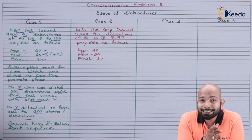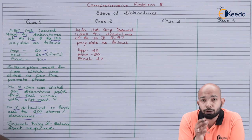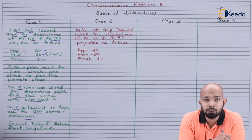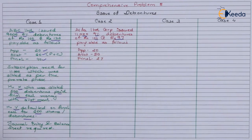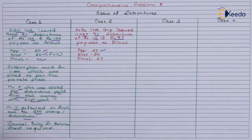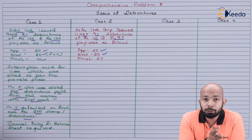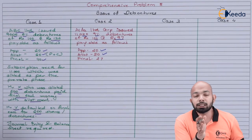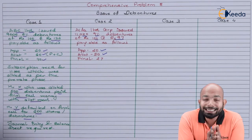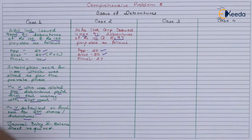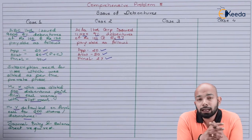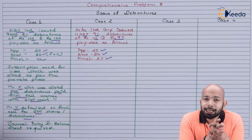Case two refers to Alpha Limited, who issued 11,000 9% debentures of Rs.100 at Rs.97 — meaning there is an issue at discount here. The payable amount: on application Rs.20, on allotment Rs.50 (after the discount of Rs.3 has been taken into consideration), and the final call value comes to Rs.27.